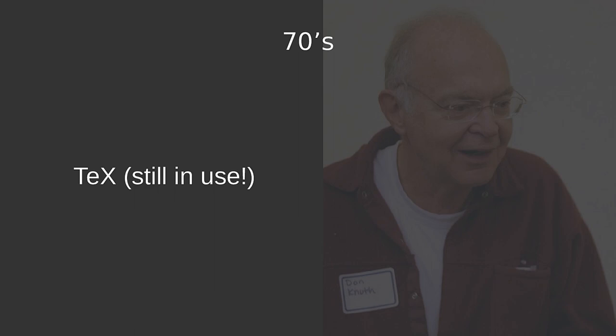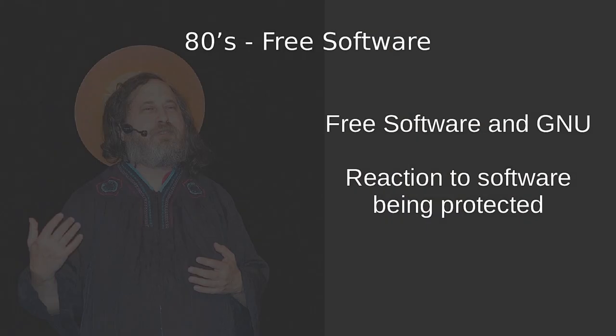With the programming language C, you could reuse software more easily between different printer versions or computers. All of a sudden, there was a need to capitalize or commercialize software, and in order to do that, you locked it in. And this guy here, Richard Stallman, he started a counter movement — the free software movement — that wanted to create free software and a completely free operating system called GNU.